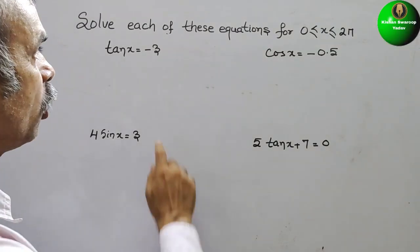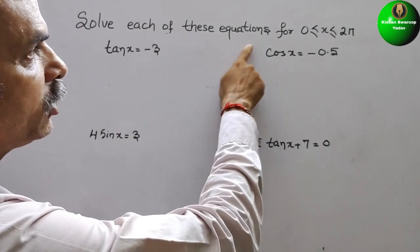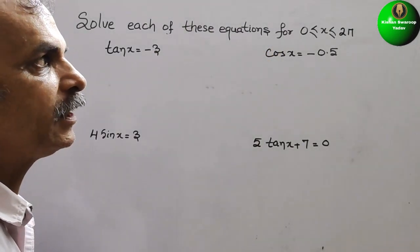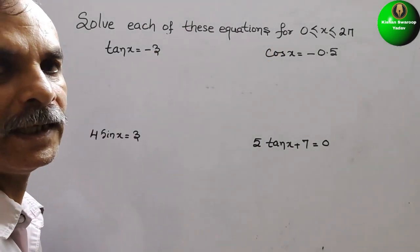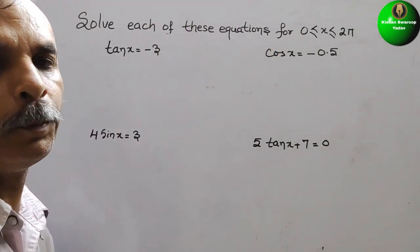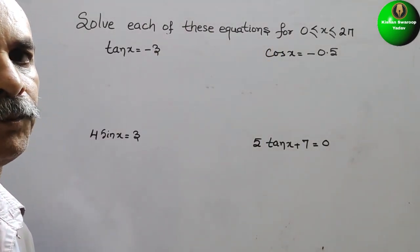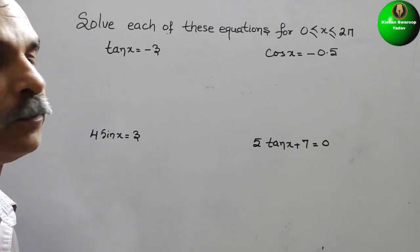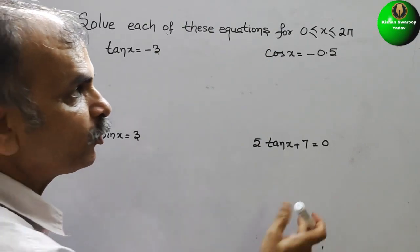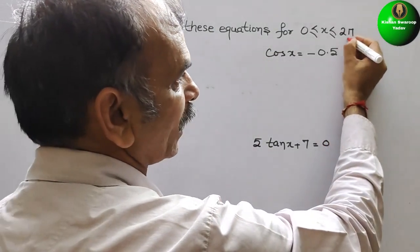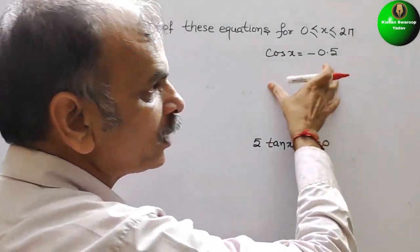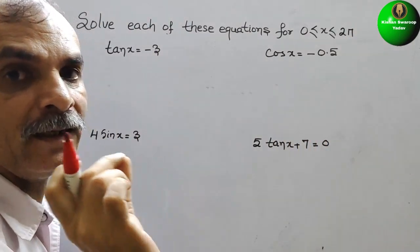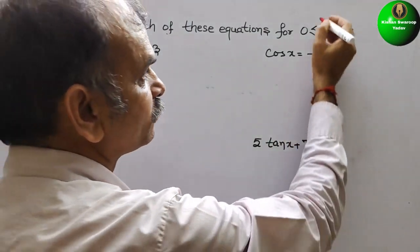The question is to solve each of these equations for 0 ≤ x ≤ 2π. Since 2π is mentioned, that means we have to find the values in radians.